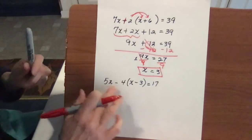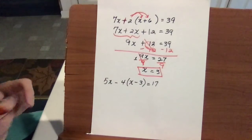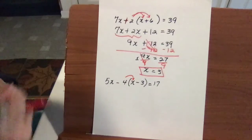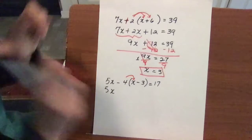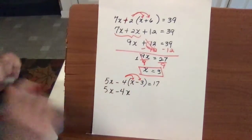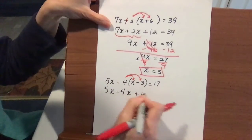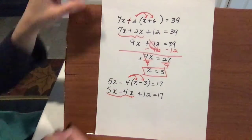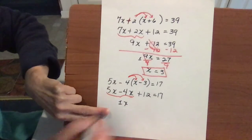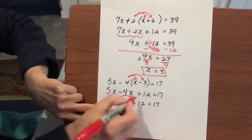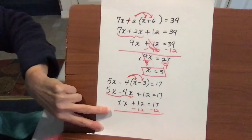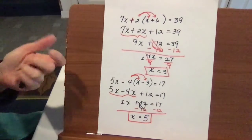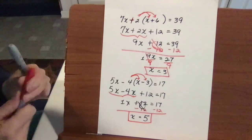We have one more: 5x minus 4 times the quantity x minus 3, equals 17. Distribute the 4: keep 5x; negative 4 times x is negative 4x; negative 4 times negative 3 is plus 12. Combine like terms: 5x minus 4x gives 1x, plus 12 equals 17. Subtract 12 from both sides — x equals 5. That is your answer, and that's how you use combining like terms and the distributive property to solve multi-step equations.